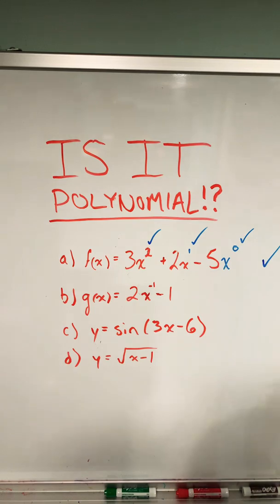B is a little bit sneaky. It kind of looks like a linear function, but because of the negative exponent, remember, that's not a positive power. So we say no, that is not a polynomial function.